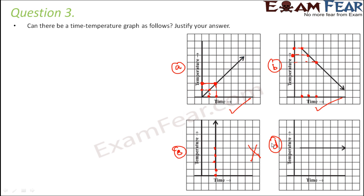Graph D shows time increasing while temperature remains constant. When time increases along the x-axis, the temperature value stays the same on the y-axis. It is possible that temperature might remain constant with increasing time, so this graph is also possible.